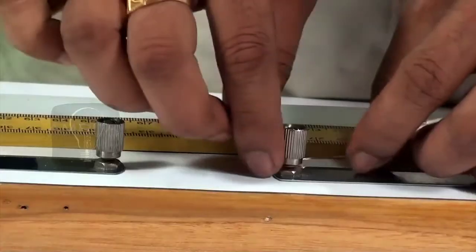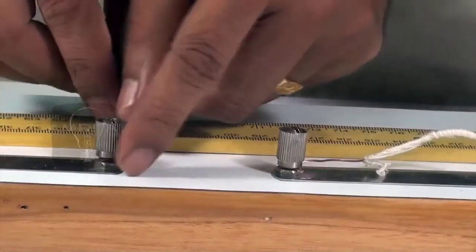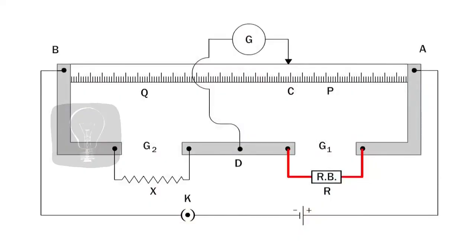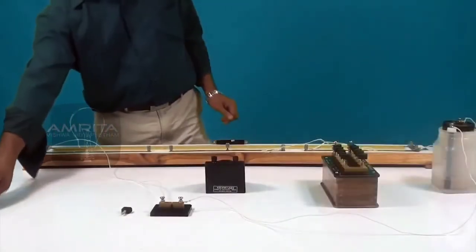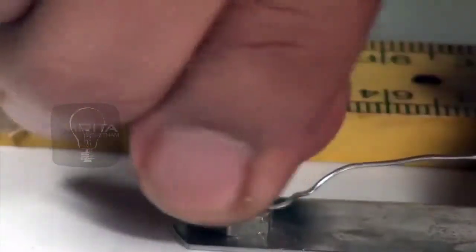Introduce the resistance box in the gap G1 of the meter bridge. Now take the resistance wire and connect it in the gap G2 of the meter bridge.